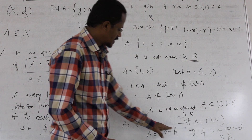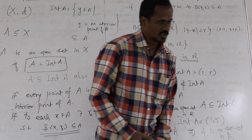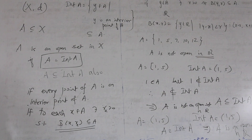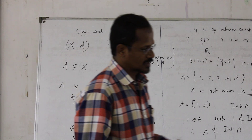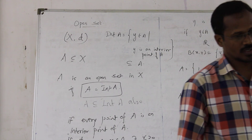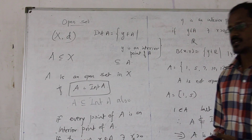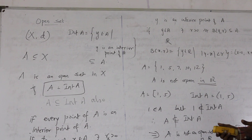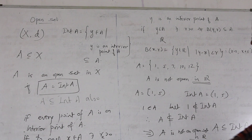So A = (1, 5) gives interior(A) = (1, 5) — they are equal — hence A is an open set. These are examples of sets which are open and sets which are not open, and we have clearly looked at why each case holds.